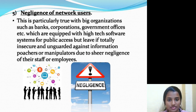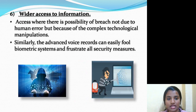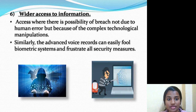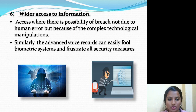That can also be a reason for the commission of cyber crime. The sixth reason is wider access to information. There is a possibility of breach not due to human error but because of complex technological manipulations. For example, personal security information can be easily stolen by implementing logic bombs, and advanced voice recorders can easily fool biometric systems and frustrate all security measures.